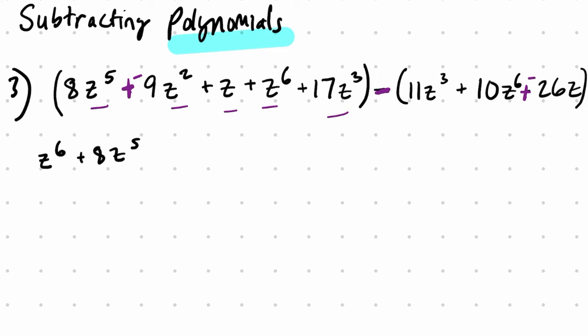So we have, check them off as we go, 6th, 5th, I don't see a 4th, I see a 3rd, so plus 17z to the third. And then I see a squared, so negative 9z squared. I could write plus negative 9z squared, but I don't need to. And then plus just z.